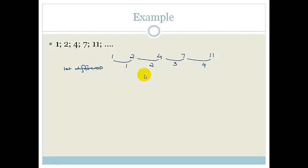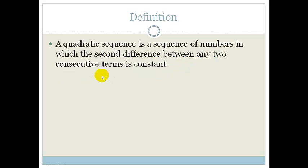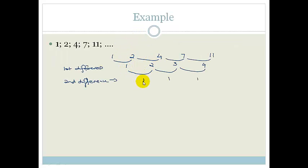Now if I go on to the second difference — that's this term minus that term — 2 minus 1 is 1, 3 minus 2 is 1, and 4 minus 3 is 1. This is called the second difference. Going back to that definition, a quadratic sequence has a second difference that is constant — stays the same. So this confirms we have a quadratic sequence.